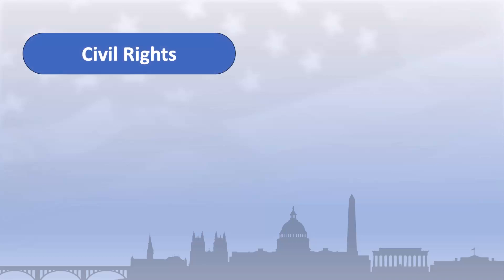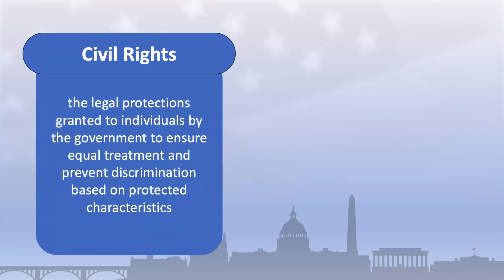In the simplest terms, civil rights are the legal protections granted to individuals by the government to ensure equal treatment and prevent discrimination based on characteristics such as race, gender, religion, national origin, disability, or other protected characteristic. Civil rights laws are designed to ensure that everyone has equal opportunities and protections under the law.